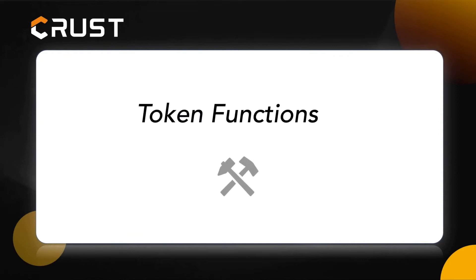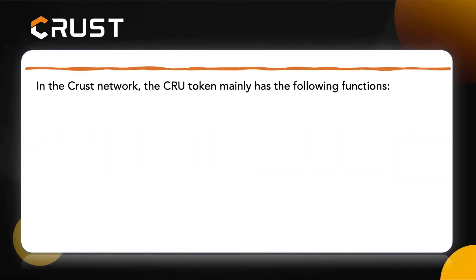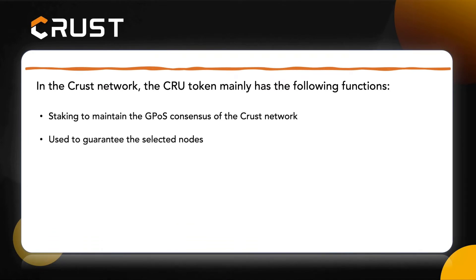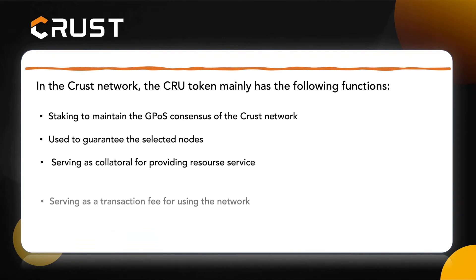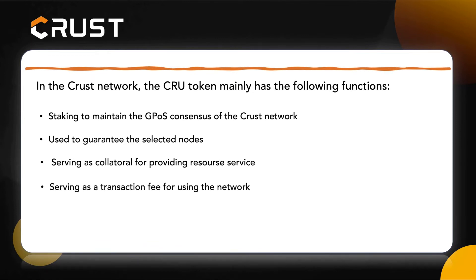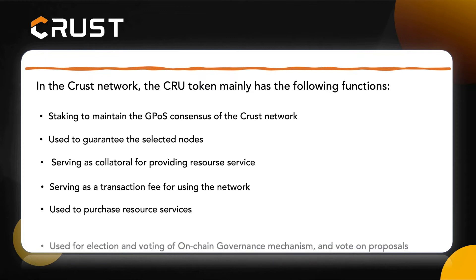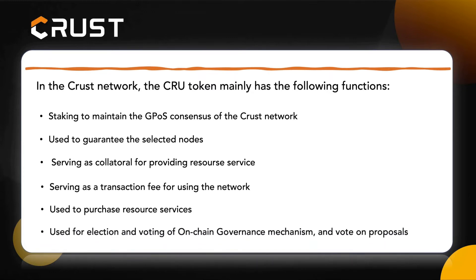As the native token of CRUST, CRU has six main functions: staking to maintain the GPOS consensus of the CRUST network; used to guarantee the selected nodes; serving as collateral for providing resource service; serving as a transaction fee for using the network; used to purchase storage services; used for election and voting of on-chain governance mechanism and vote on proposals.